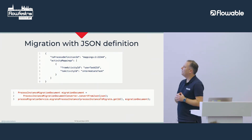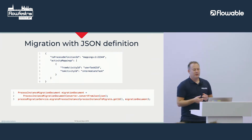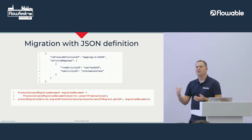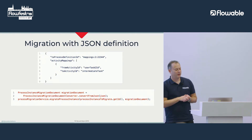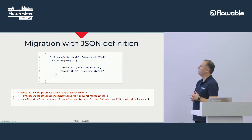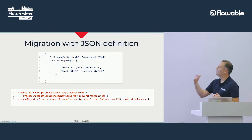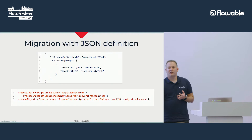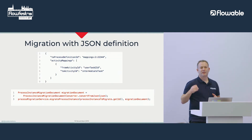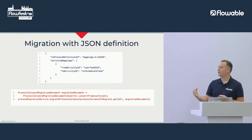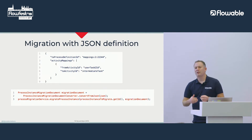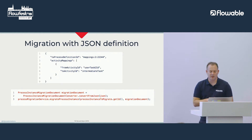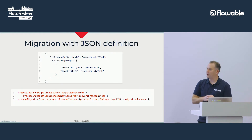Instead of using the API directly, you can also define the migration as a JSON definition. It uses the exact same property names and language — activity mappings with from activity ID to activity ID. You can define up front how you want to migrate from one version of a process definition to another, and you don't have to do it only with the Java API — you can use both approaches.